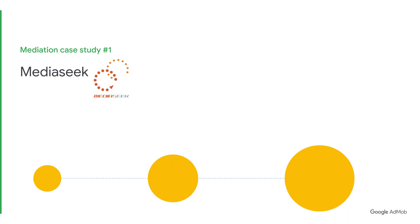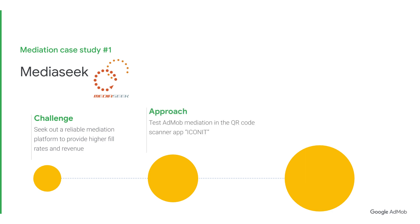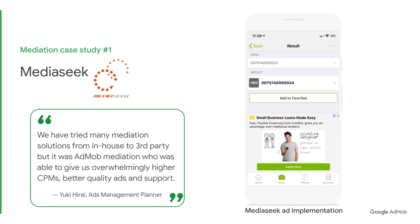Now, let's go through two stories of developers who have achieved success with AdMob mediation. The first story is from MediaSeq, a Japanese app developer that provides utility apps for users. The team was looking for a reliable mediation platform that would provide higher fill rates and revenue, so they tested AdMob mediation in the QR code scanner app, IconIt. The results were impressive: they achieved an almost 100% fill rate, up to two times revenue growth across apps, and a three to five times CPM growth. Yuki Hirae, Ads management planner for MediaSeq, noted that out of the many mediation solutions they had tried, from in-house to third party, AdMob mediation was able to give them overwhelmingly higher CPMs, along with better quality ads and support.